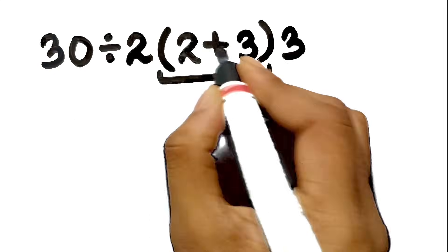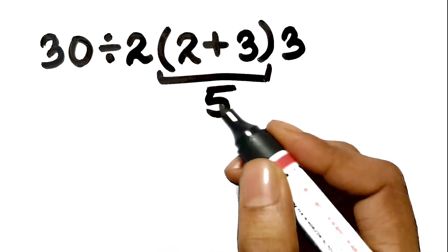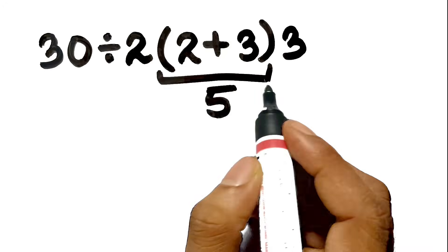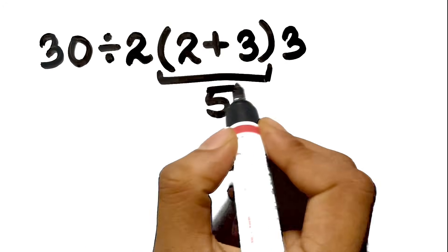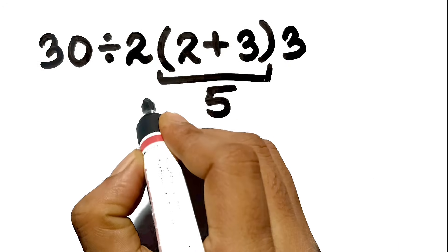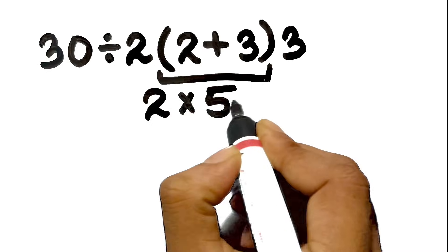Inside the parenthesis, two plus three gives us five. Then, many people naturally look at the two hugging the parenthesis and the three at the very end and group them all together as one solid block.